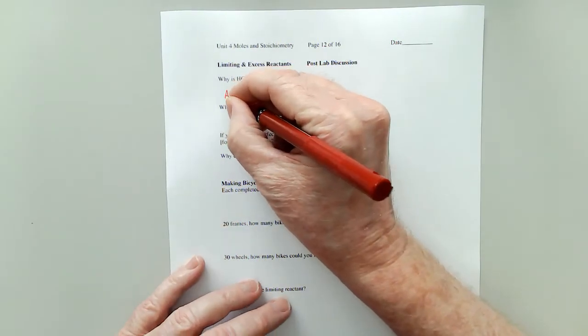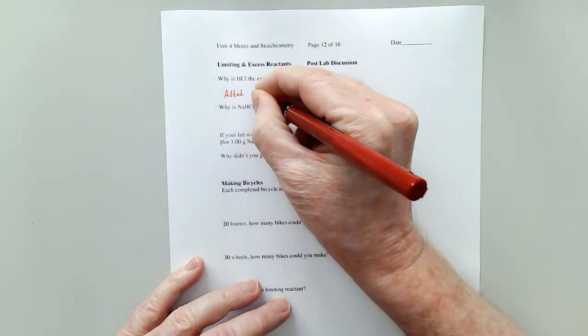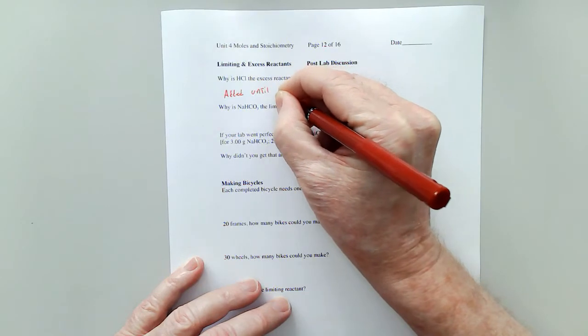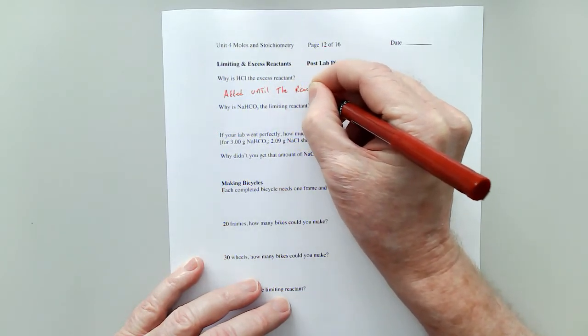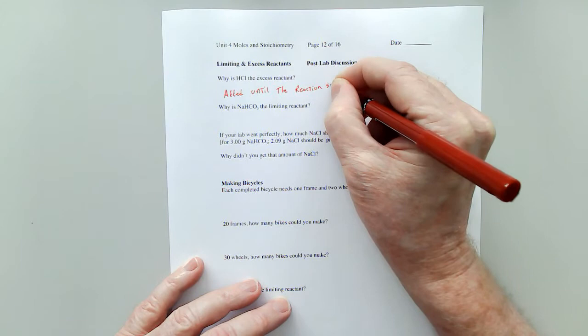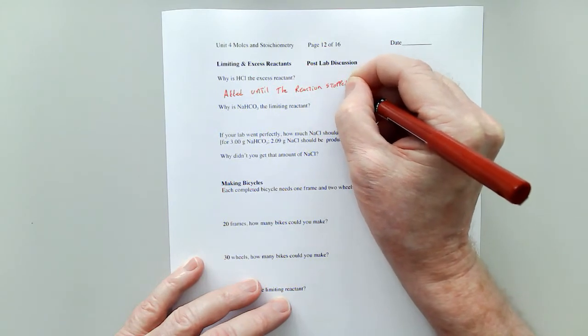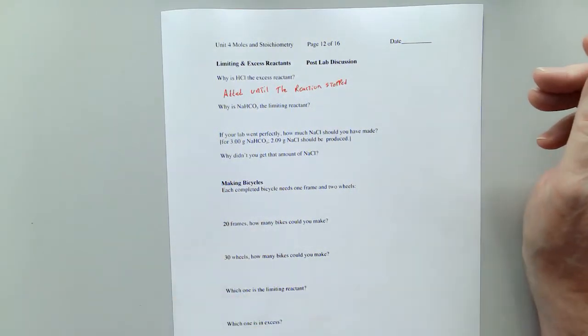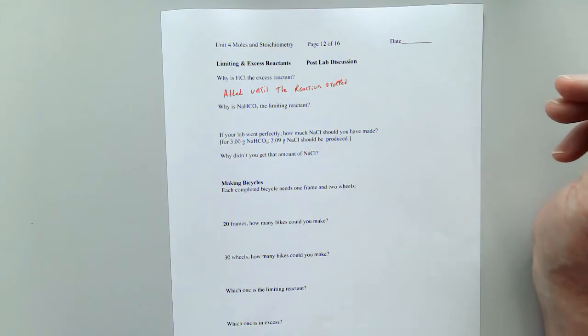You added until the reaction stopped. And you probably added even more after that. So we know just from our observational evidence that HCl is definitely the excess reactant.